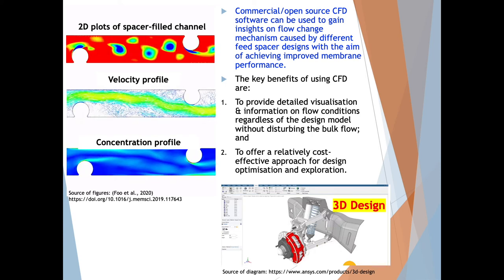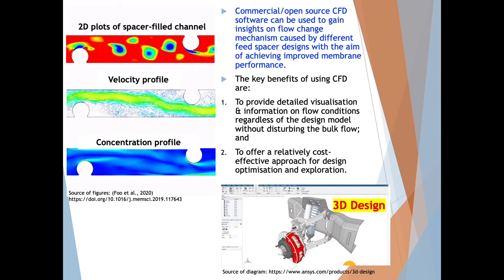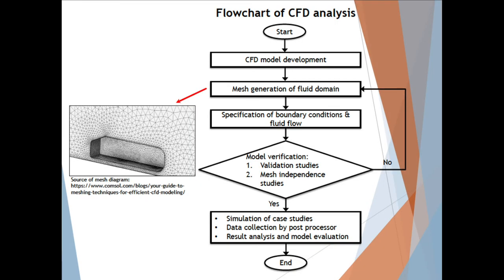The key benefits of using CFD are: first, to provide detailed visualization and information on flow conditions regardless of the design model without disturbing the bulk flow; and second, to offer a relatively cost-effective approach for design optimization and exploration. CFD analysis can be first started with model development, followed by mesh generation of the fluid domain, as shown in the figure, before proceeding to specification of boundary conditions and fluid flow. The next step is critical as it will verify the model proposed. After the model is successfully verified, one can start simulation under varying conditions, followed by result analysis.